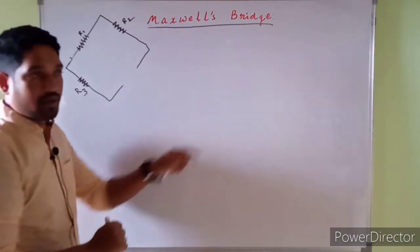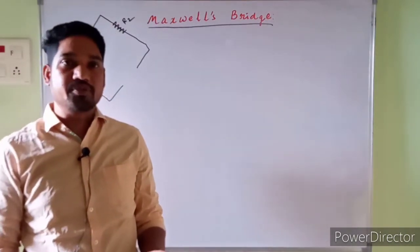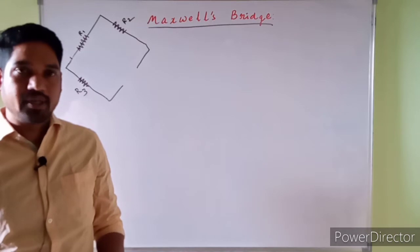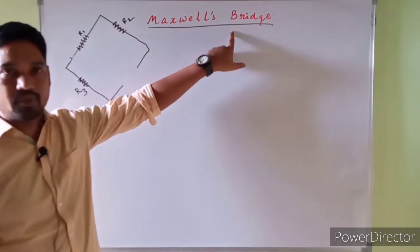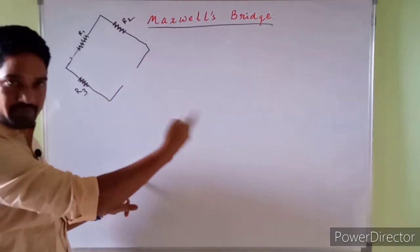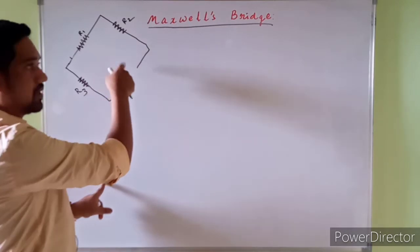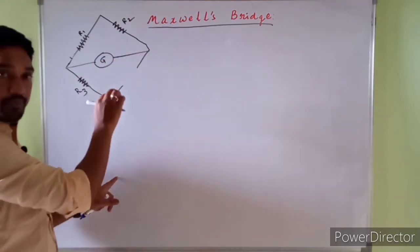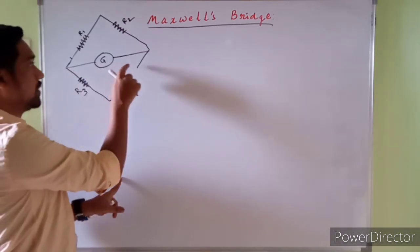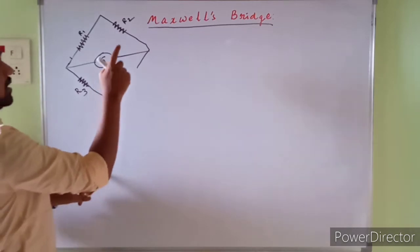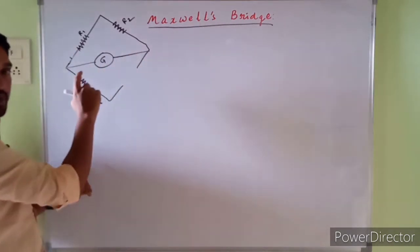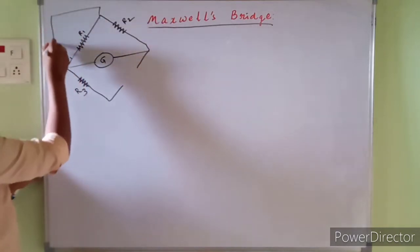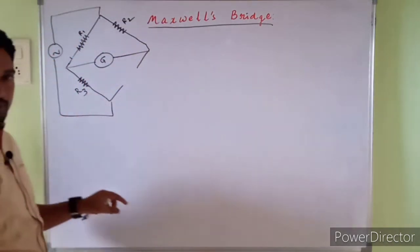Maxwell's bridge comes under the classification of AC bridges, which is intended to measure unknown capacitance and inductance — especially unknown inductance. A small modification has been done from the previous video: we have R1, R2, R3 and a galvanometer which shows the indication at which the current becomes zero, indicating the balanced condition. The source is now an AC source, not a battery, because it's an AC bridge.